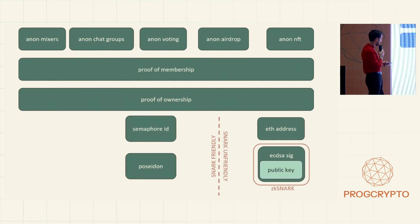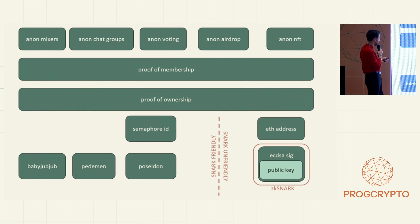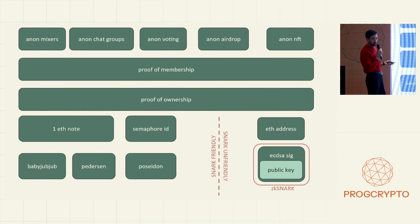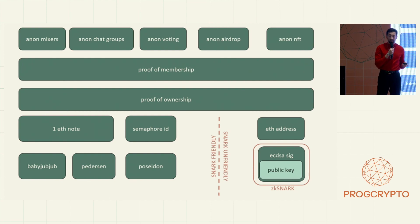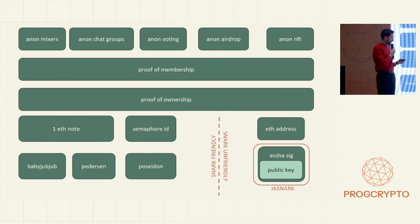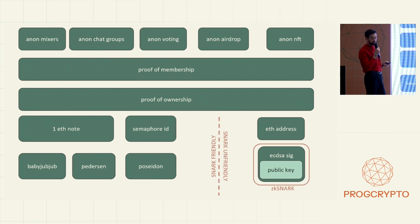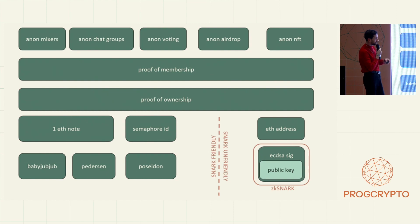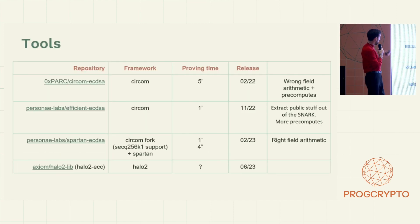Using SNARK-friendly curves like Poseidon or Baby JubJub gives you applications like Semaphore or Tornado Cash. The drawbacks are that it introduces a new secret, and people are bad at managing secrets, and the size of the anonymity set depends on how many people interacted with the protocol before you. That's why it would be better if you could really perform ECDSA signature verification inside the SNARK.